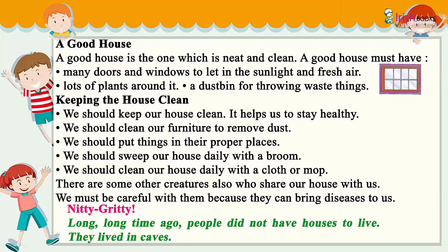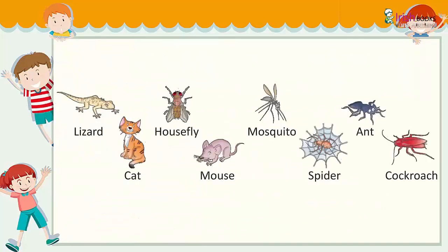Common creatures found in the house include: lizard, housefly, mosquito, ant, cat, mouse, spider, and cockroach.